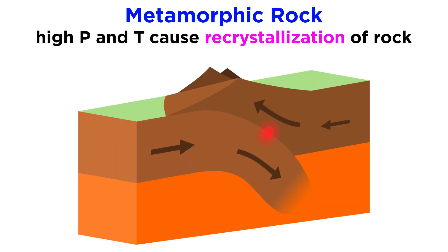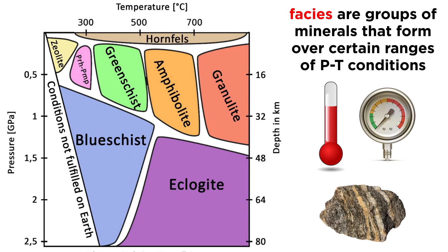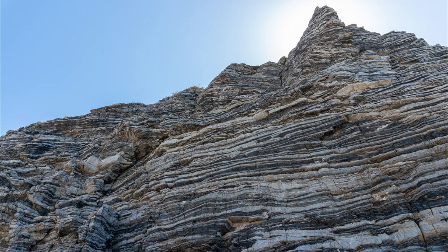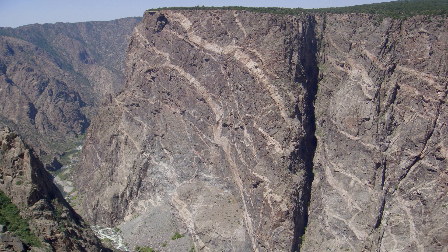In the previous tutorial we learned about how metamorphic rocks form, but there are differences in the metamorphic process that result in different types of metamorphic rock. More specifically, geologists group metamorphic rocks into facies, which represent a common group of minerals that form over certain ranges of pressure-temperature conditions. This makes it much easier to compare metamorphic rocks from different locations around the world, and also to relate metamorphic rocks to certain geologic environments.